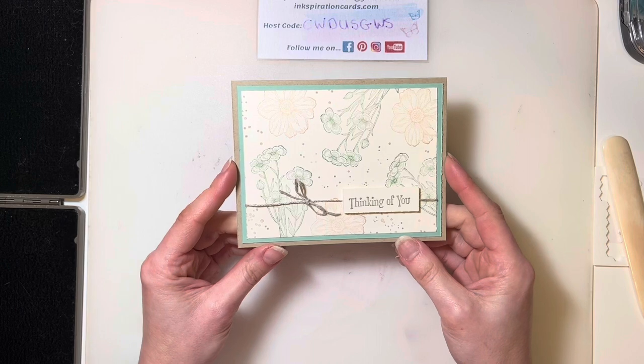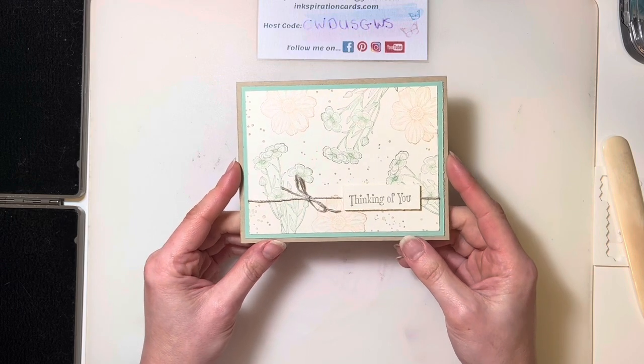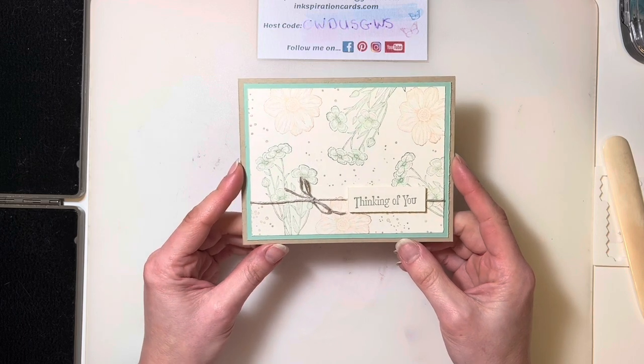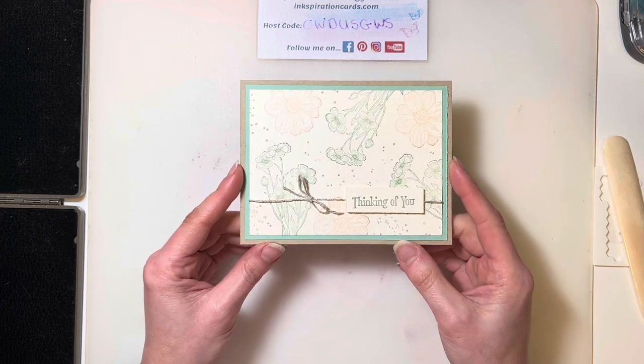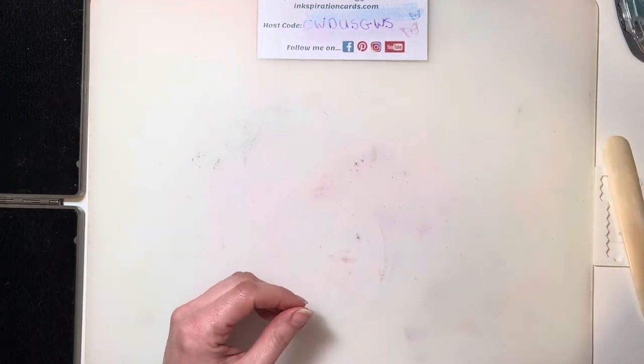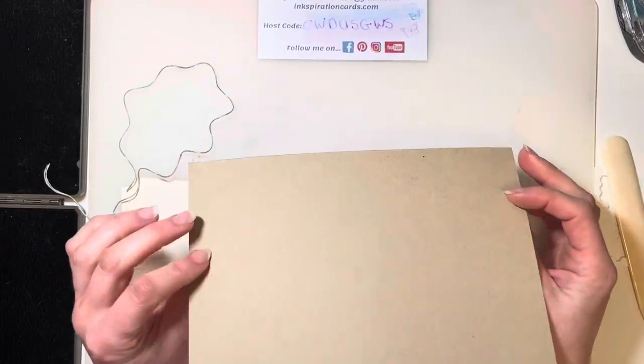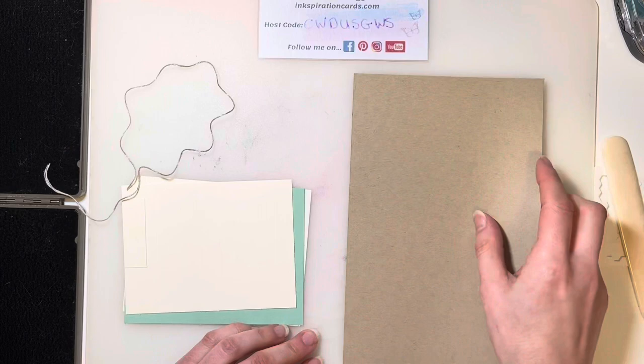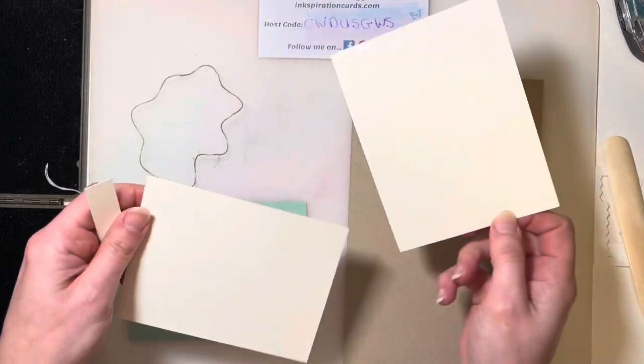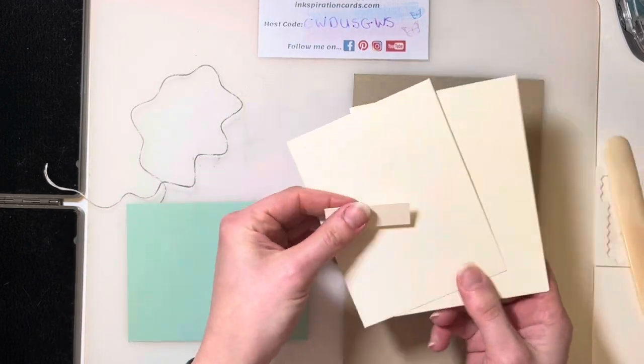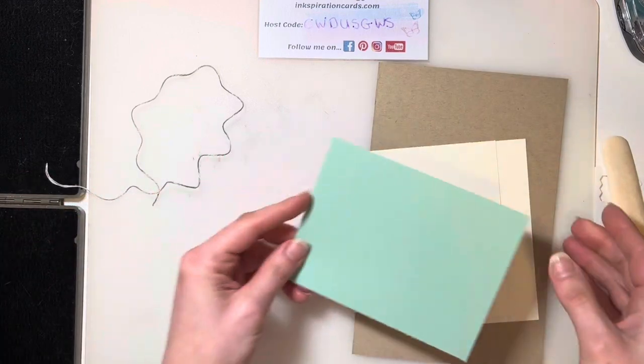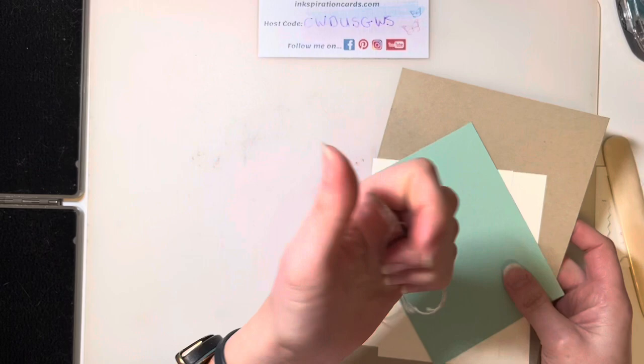So here's this week's card and this time around I thought I'd do a little collage stamping. This stamp set really lends itself well to do that with the different sizes and variety of images that it has. So what you're going to need for this week's card from your class supplies are a large piece of crumb cake, just half a sheet of 8.5 by 11. You'll have three pieces of very vanilla, one's teeny tiny and then two larger ones, and then you'll have one piece of mint macaron as well as some linen thread.